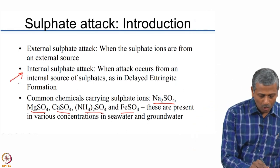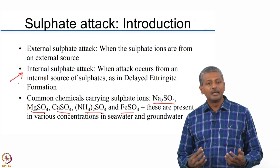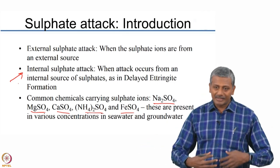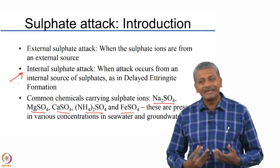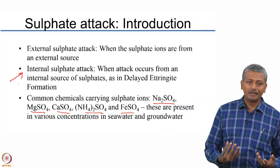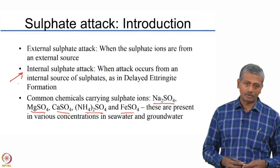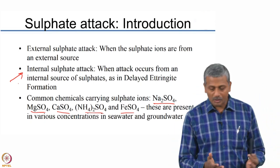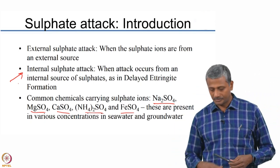You may also have another type called internal sulphate attack, where the source of sulphates does not come from outside — there is already a source built into the concrete which creates a deleterious reaction later in the life cycle of the concrete. This is also known as delayed ettringite formation.